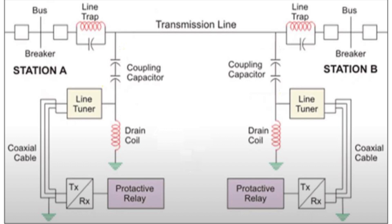Hybrids are circuits that allow two or more transmitters to connect to one coaxial cable without causing interference or intermodulation distortion. They isolate the signals from different transmitters and, in some cases, from receivers, ensuring that the signals are clear and unaffected by one another.